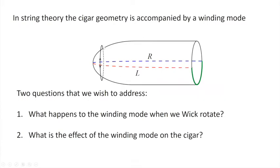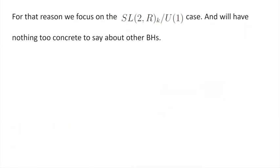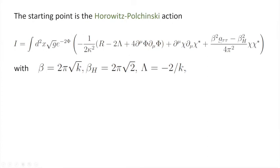The g_{tau,tau} appearing in the mass term of the winding mode is the metric in the time direction. This happens because the string winds in that direction, so its energy depends on how large that circle is — cheaper near the tip, more expensive further out. This is the origin of this mass term in the Orbifolded-Polchinski action. When k equals one, the mass squared of the winding mode becomes zero — it becomes massless.